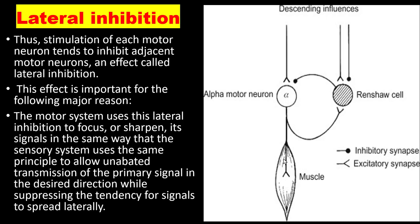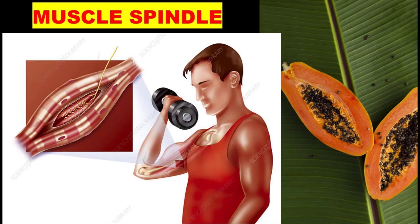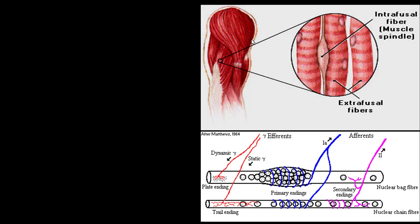The muscle spindle is located in the middle of the muscle belly. If you cut the root longitudinally, the structure in its center is similar to the muscle spindle — just as seeds are located in the center of a root, the muscle spindle is located in the center with a capsule and fibers. Muscle spindles are found within the belly of the muscle, running in parallel with the main muscle fibers.